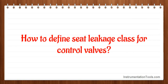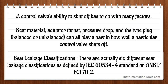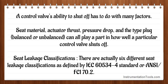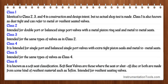How to define seat leakage class for control valves? A control valve's ability to shut off depends on many factors: seat material, actuator thrust, pressure drop, and the plug type — balanced or unbalanced. There are six different seat leakage classifications as defined by IEC 60534-4 standard or ANSI/FCI 70.2. Class 1 is identical to Classes 2, 3, and 4 in construction and design intent but no actual shop test is made. Class 1 is also known as dust tight and can refer to metal or resilient seated valves.